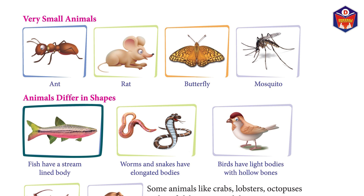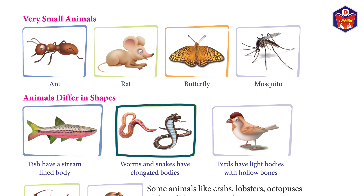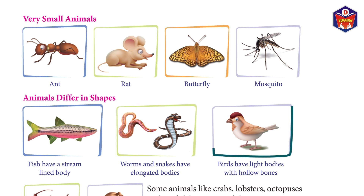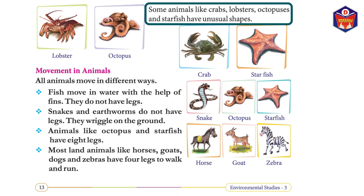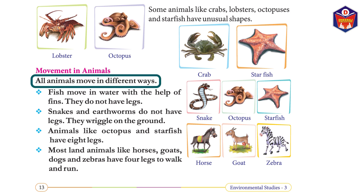Animals differ in shapes. Fish have a streamlined body. Worms and snakes have elongated bodies. Birds have light bodies with hollow bones. Some animals like crabs, lobsters, octopuses, and starfish have unusual shapes. All animals move in different ways. Fish move in water with the help of fins; they do not have legs.